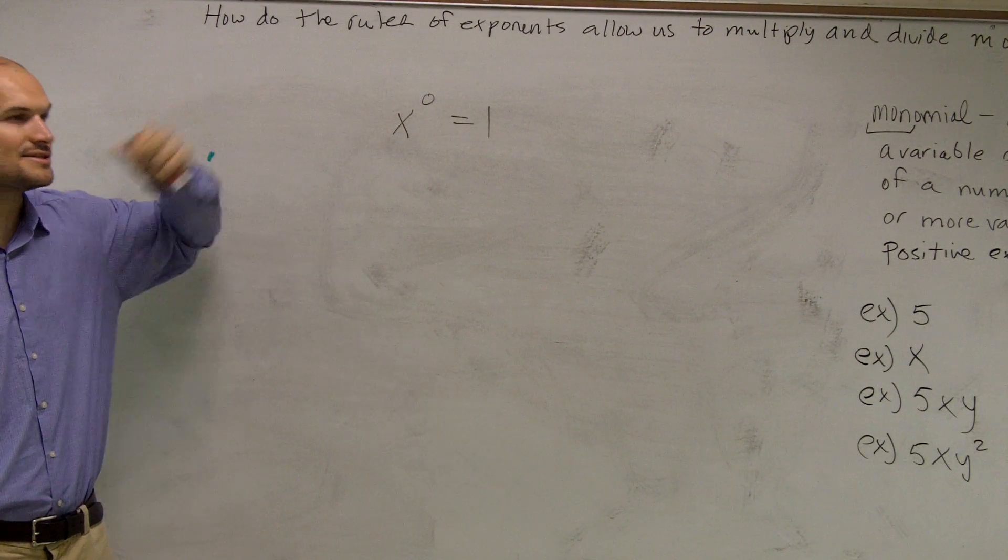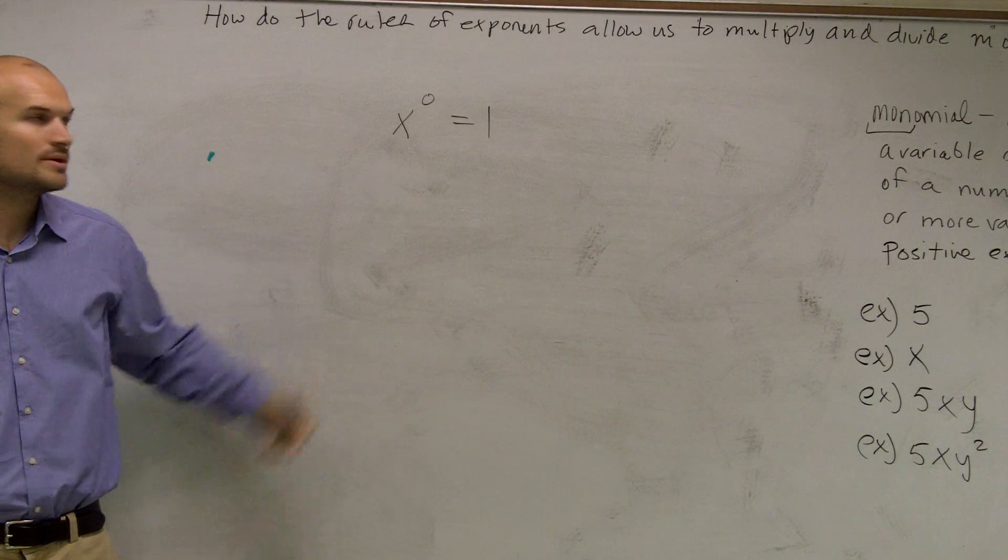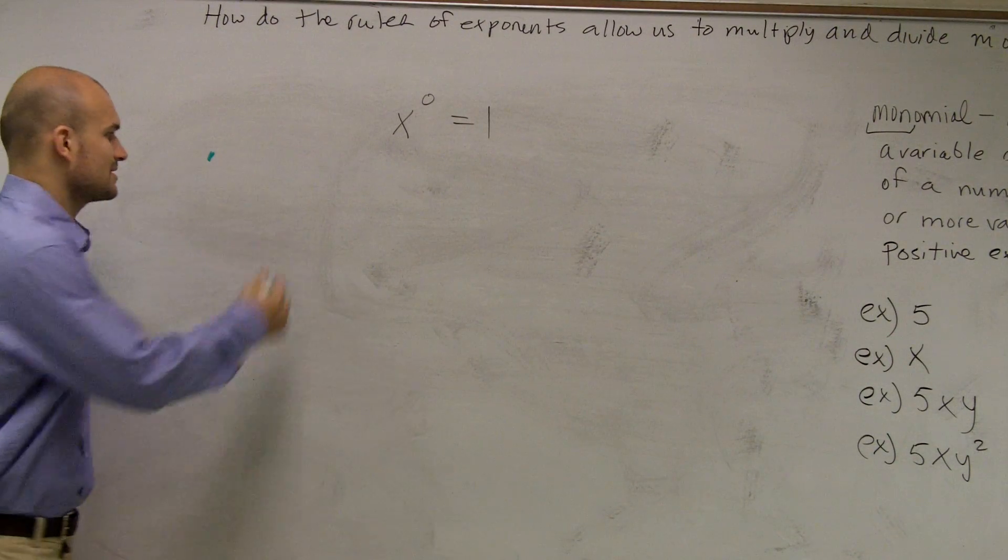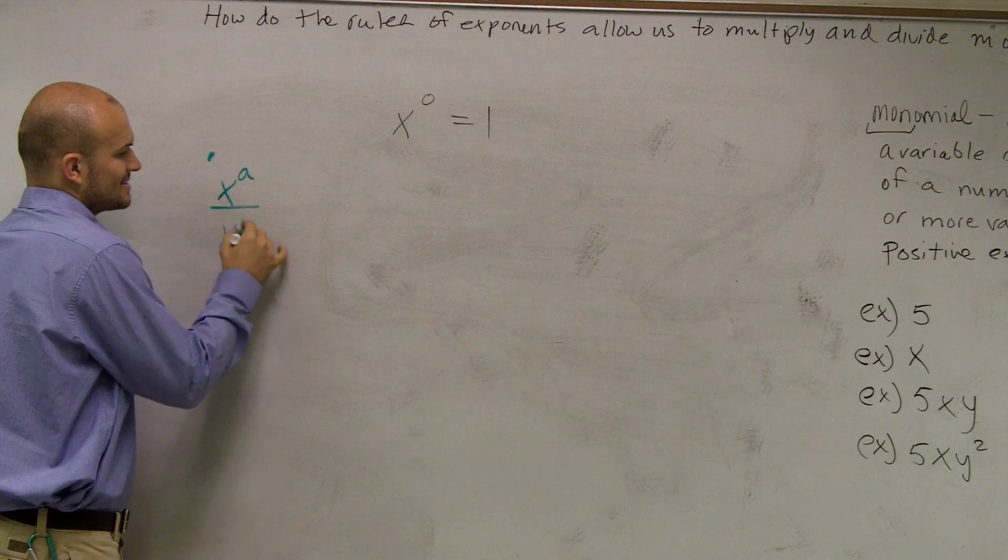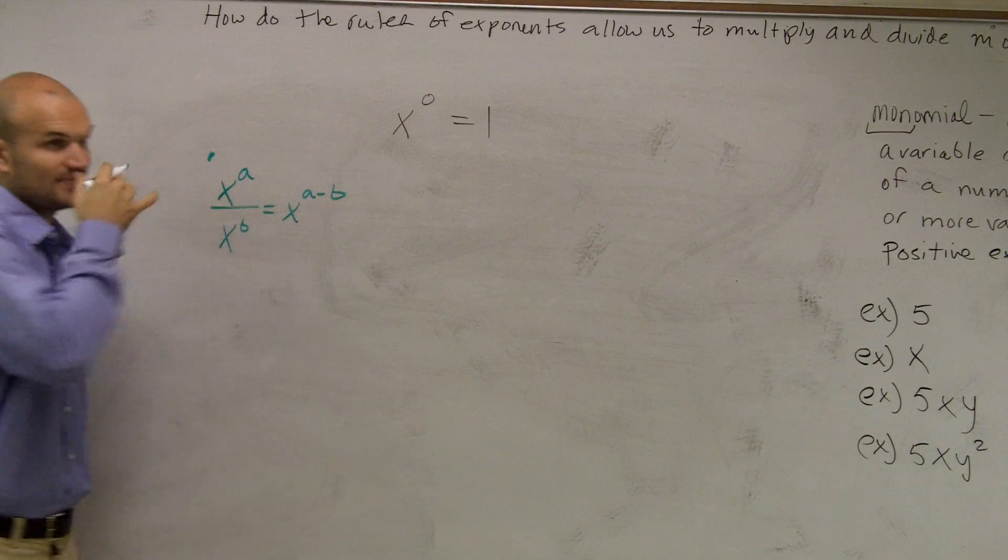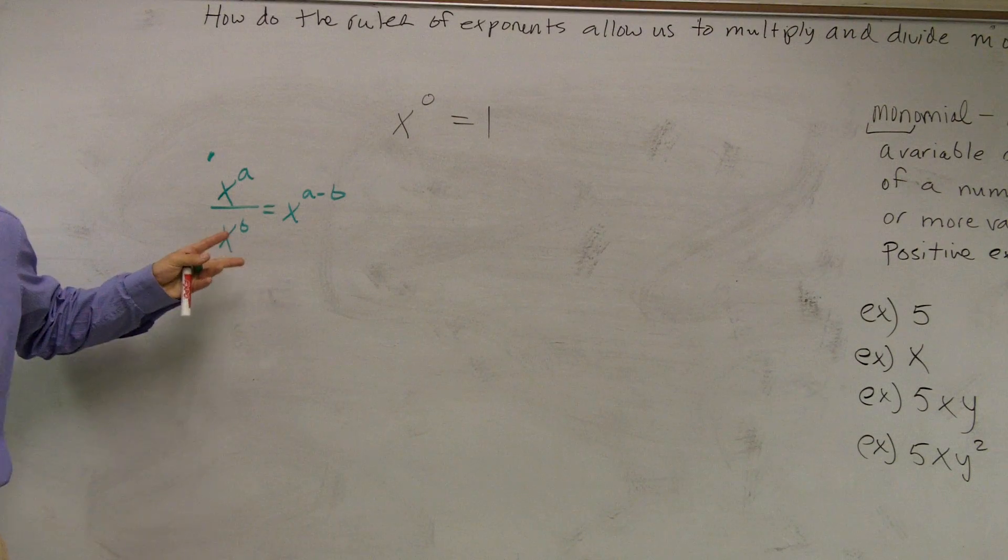So ladies and gentlemen, we said that x to the 0 equals 1. Well, let's think about a couple things. First thing we need to know is x to the a divided by x to the b equals x to the a minus b. That's the rule of dividing exponents.